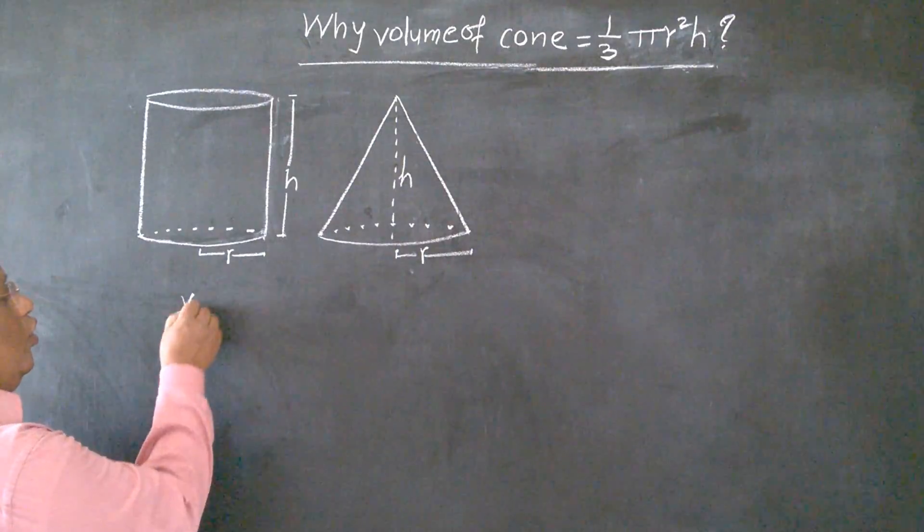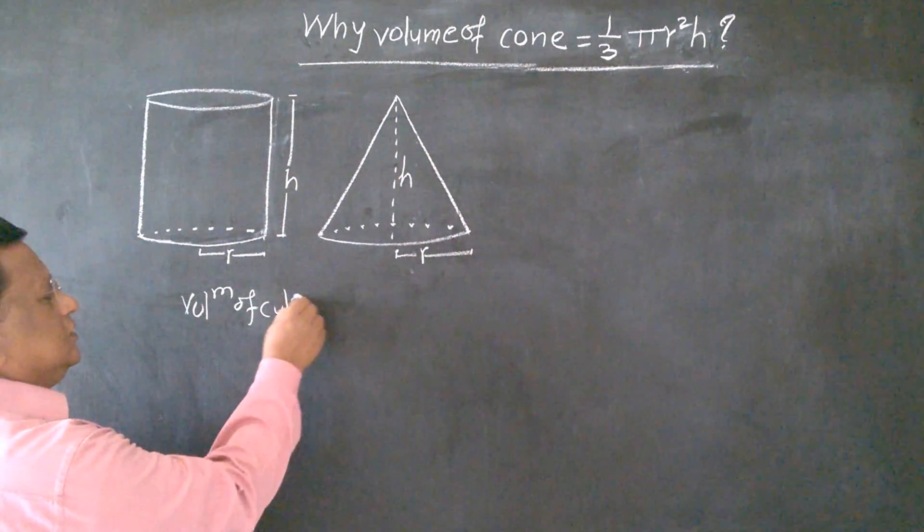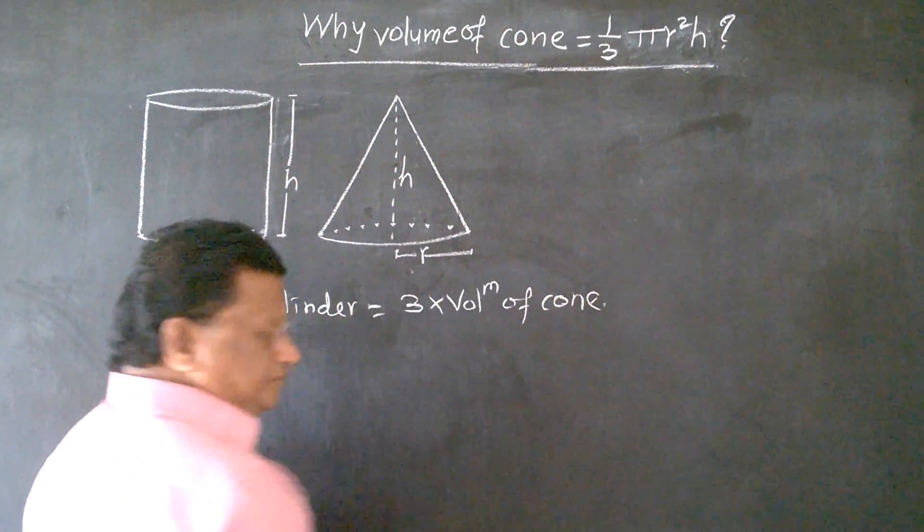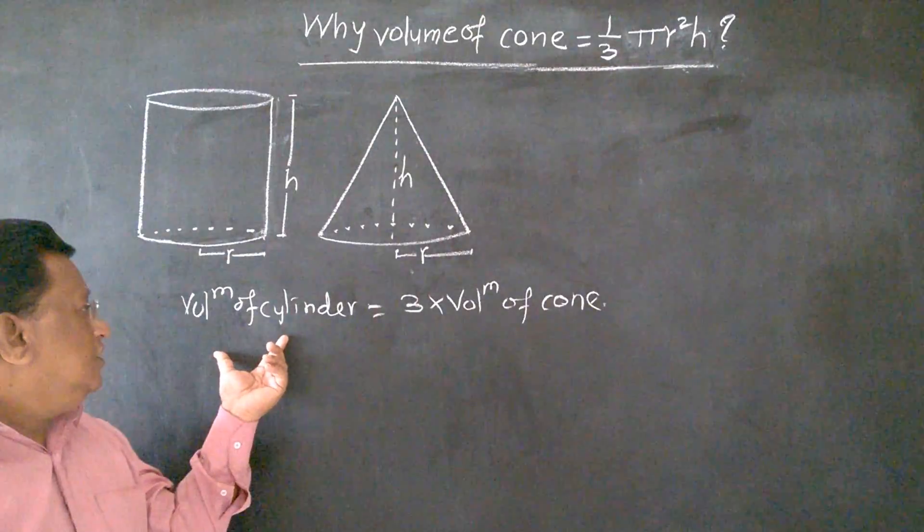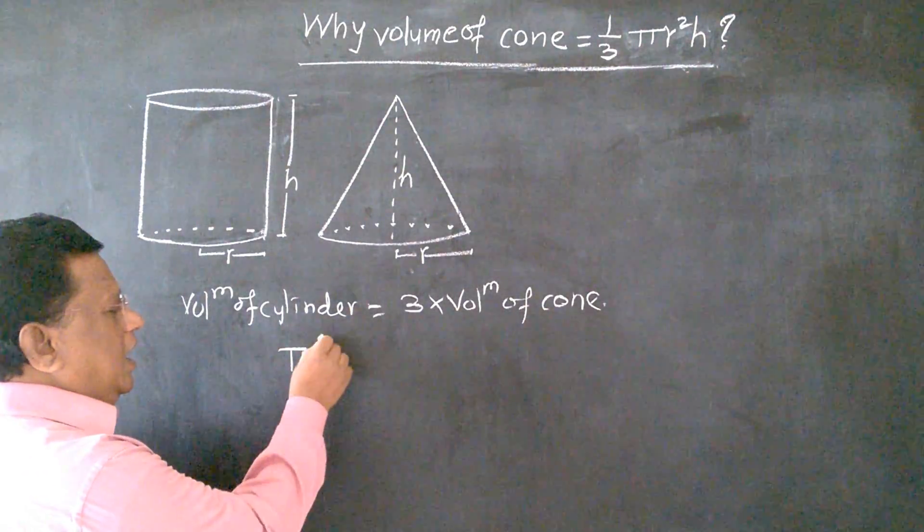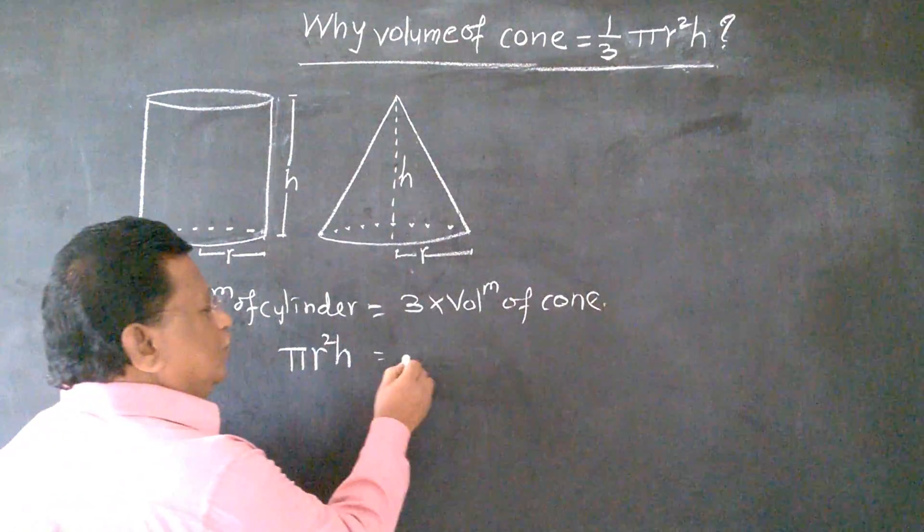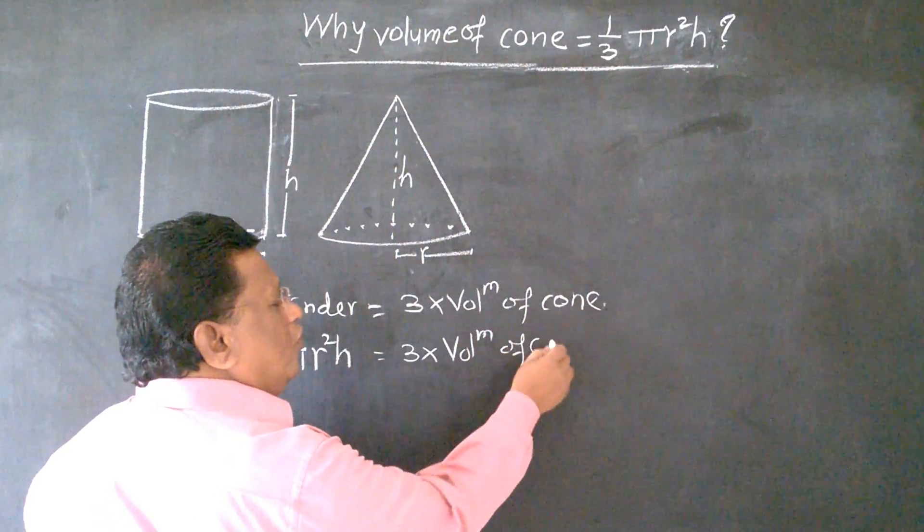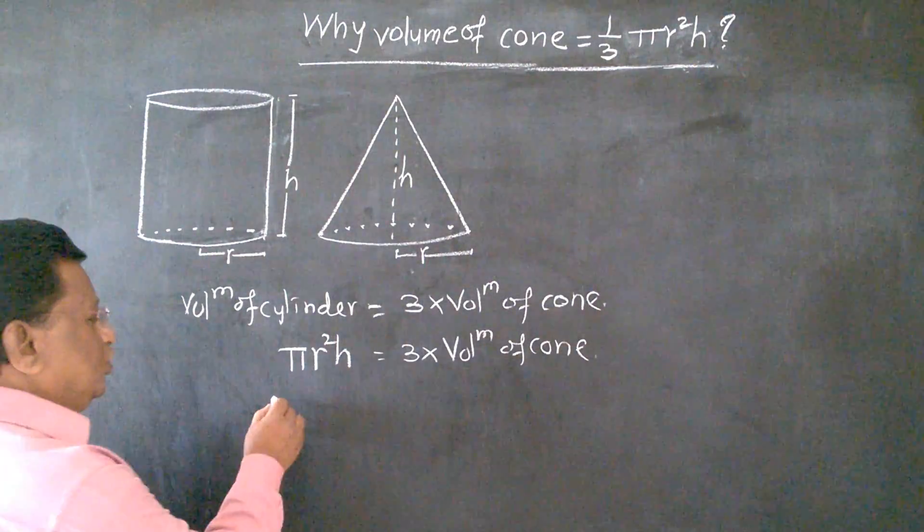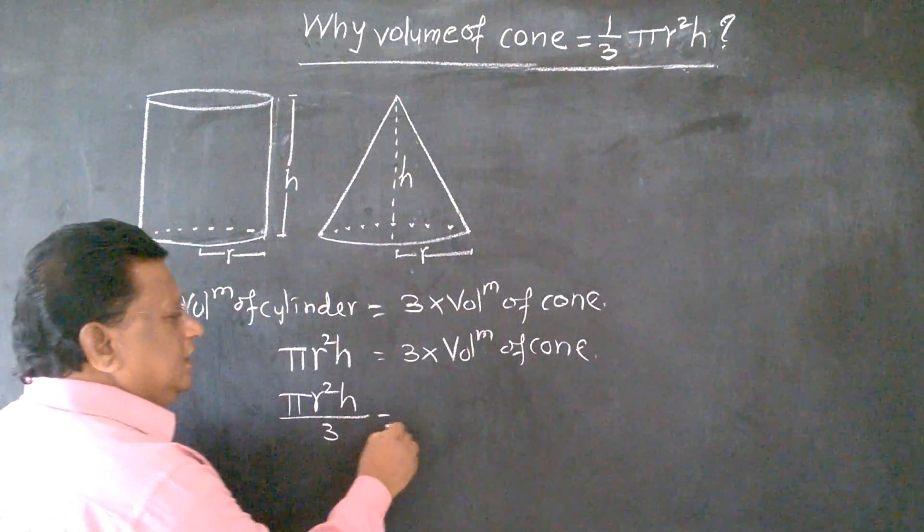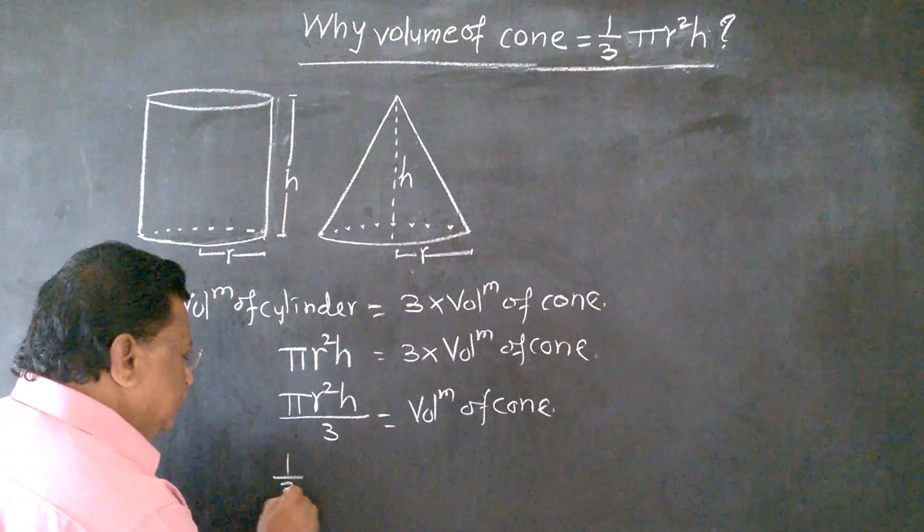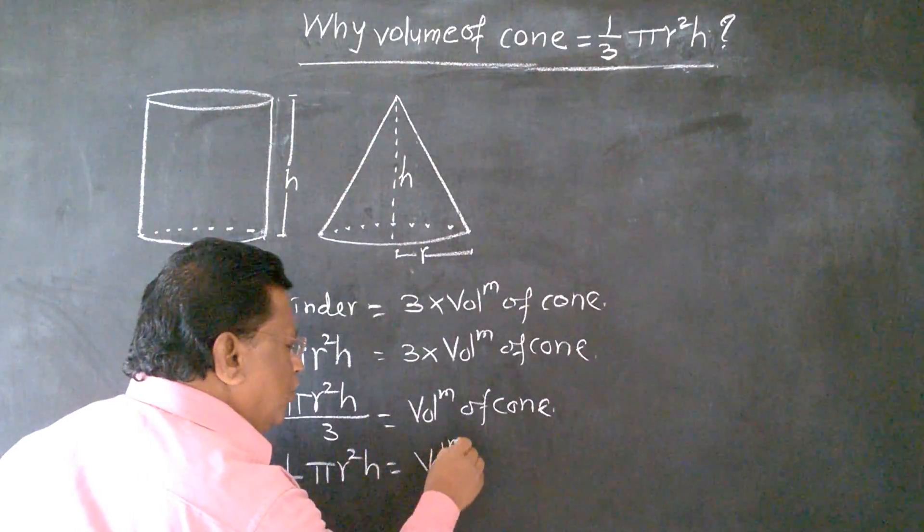That is, volume of cylinder is equal to three times volume of cone. But we have proved a formula for volume of cylinder, that volume of cylinder is pi r square h, which is equal to three times volume of cone. Let's take this three to the left side. So, pi r square h upon 3 is equal to volume of cone. Instead of writing like this, we write 1 upon 3 pi r square h is equal to volume of cone.